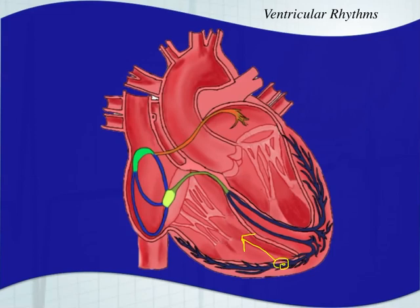Your physiological pacemaker is typically the SA node. We've talked about different possibilities in the atria and in the AV junction. Now we're talking about within the ventricles themselves — something like a Purkinje fiber, or somewhere a ventricular cell takes over as pacemaker. We have ventricular escape rhythm or a ventricular reentry.